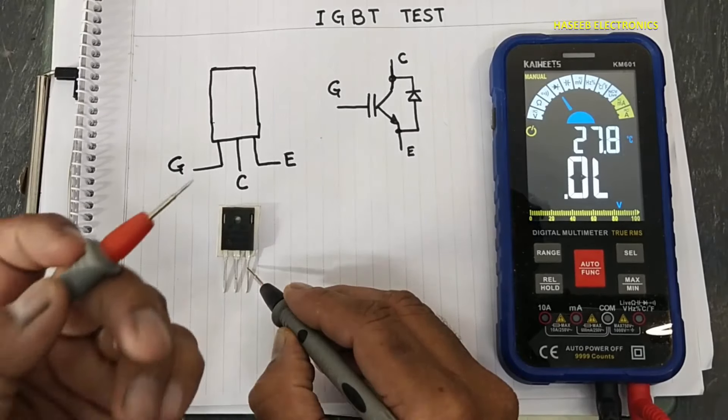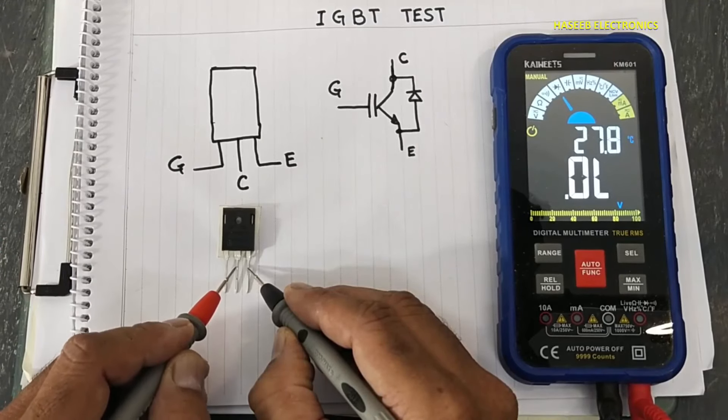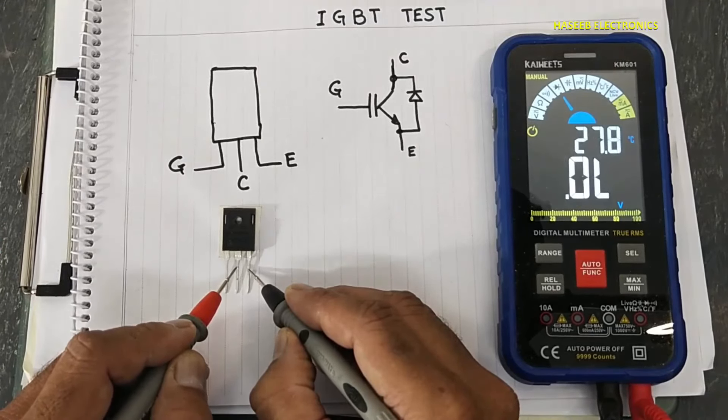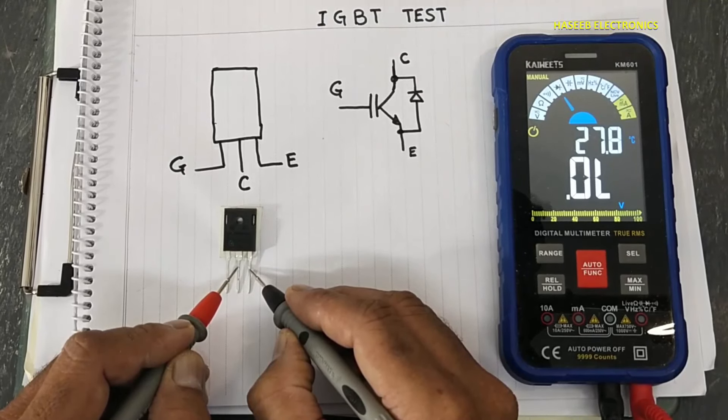Open, no resistance. If it is giving some resistance here, that means the gate is not discharged properly or the emitter to collector channel is damaged.